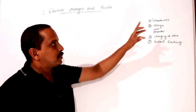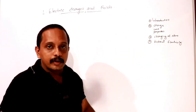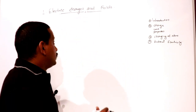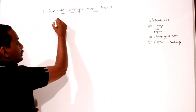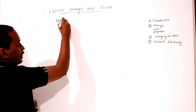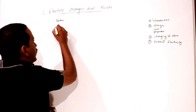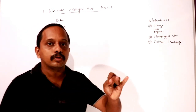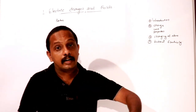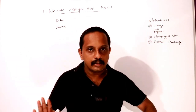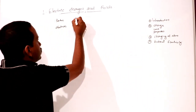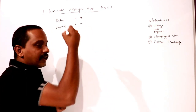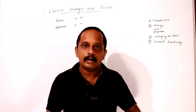Let's look at the introduction of charge and its properties. An atom has three particles: Proton, Neutron, and Electron. The proton charge is positive and the electron charge is negative. The neutron has no charge.